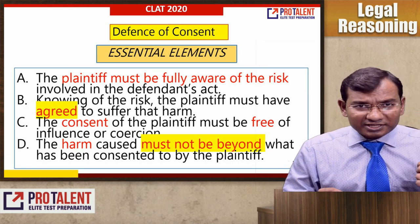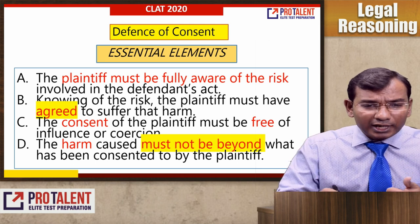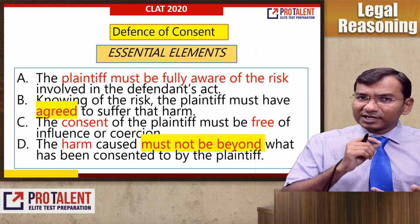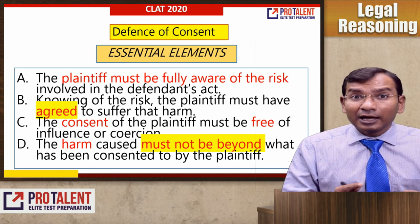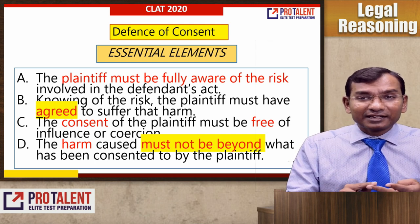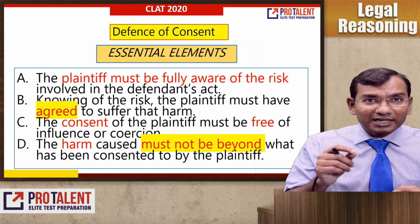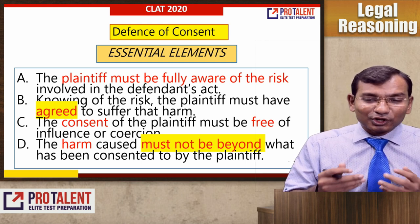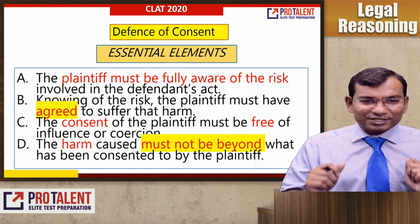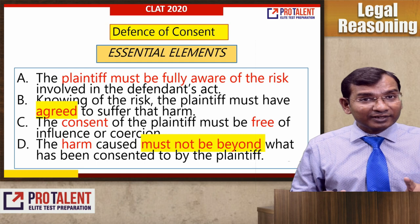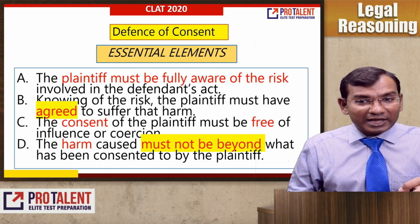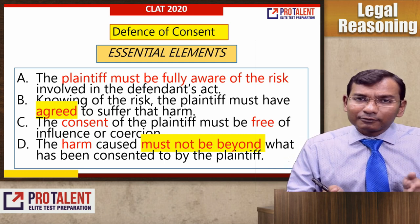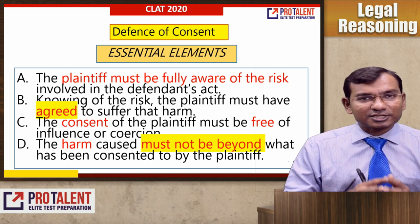The essential elements are: one, plaintiff must be fully aware of the risk; two, knowing the risk, plaintiff must have agreed to suffer that risk; three, consent of the plaintiff must be free; and four, the harm caused must not be beyond what has been consented to by the plaintiff. So plaintiff must be fully aware, after awareness must agree, that agreement must be free, and the harm that occurred must match only what was consented to.